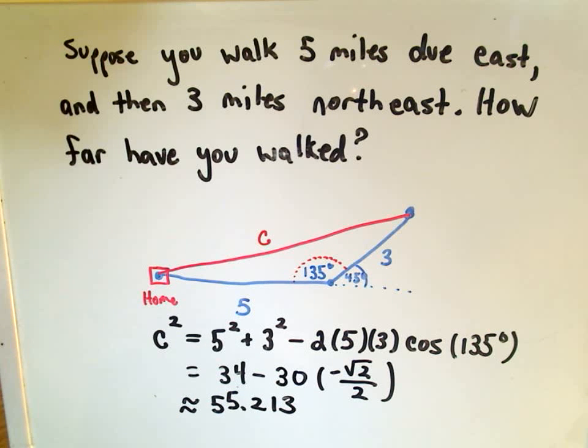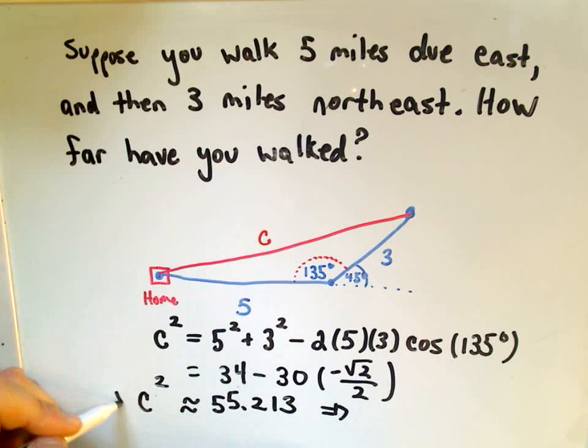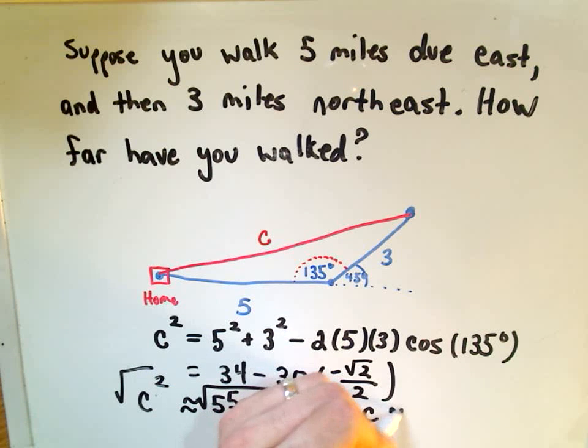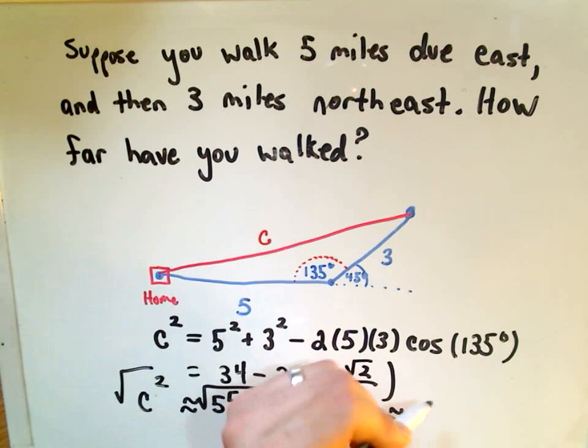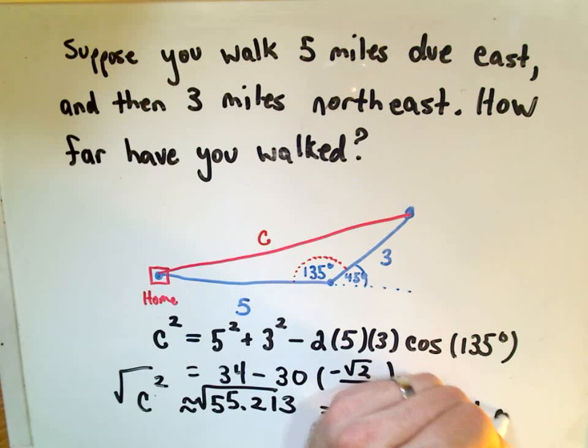Notice we found C squared in this case, so C squared is roughly equal to this value, 55.213. If we take the square root of both sides, we'll get that C is roughly equal to the value 7.431 miles.